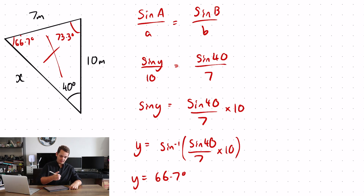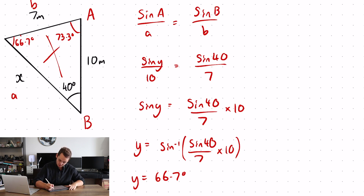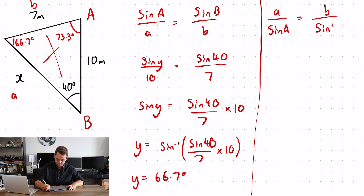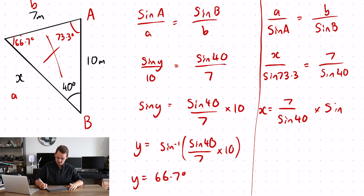Labeling up your sides and angles: I like to label my unknown side A, which makes the opposite angle A. This side would be B, opposite angle B. I'm going to use the flip version of the sine rule: A over sine A is equal to B over sine B. So X over sine 73.3 is equal to 7 over sine 40. To get X by itself: 7 over sine 40 times sine 73.3, giving a value of X as 10.4 meters.